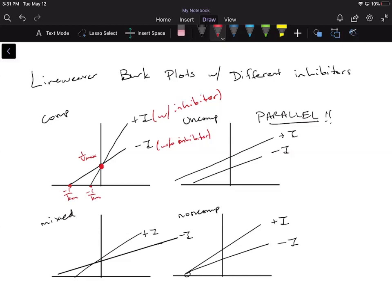But when I added that inhibitor, remember we said that the values that get closer to the origin are larger, so we increased our Km. So we increased our Km and kept the Vmax the same.